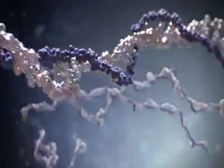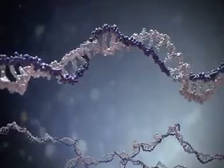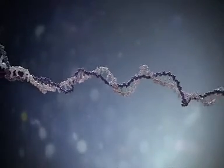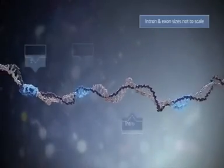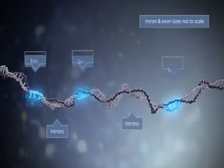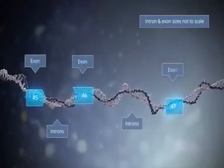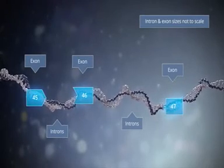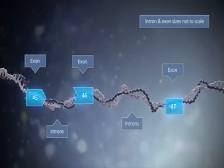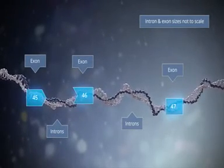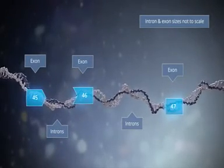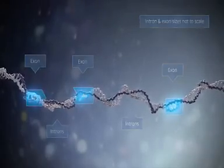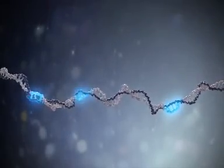The dystrophin gene is one of the longest human genes, spanning approximately 2.5 million bases. It is comprised of 79 different protein coding segments, termed exons, which are interspersed amongst introns.